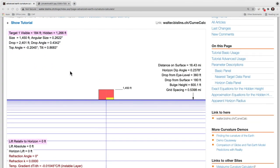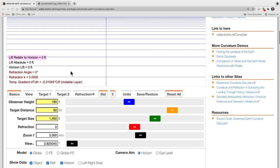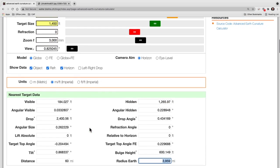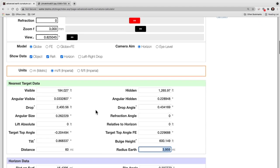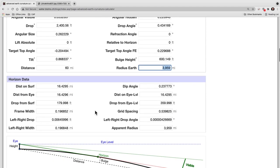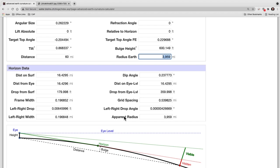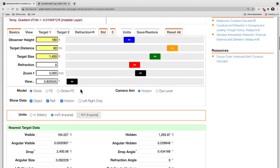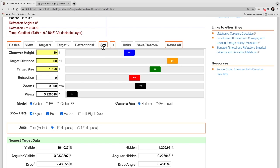So here we are at the curve calculator. We've got zero refraction, 180 feet, 60 miles and 1450 feet for the size of the building. And here's what we got. Now down here, I want to draw your attention to this and that is the apparent radius versus the radius of the earth. The radius of the earth you can put in values for. The apparent radius is what the measurements are actually made from. Now, let me show you what happens when we go and put in standard refraction.